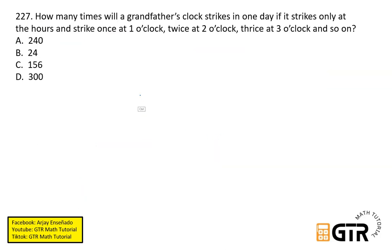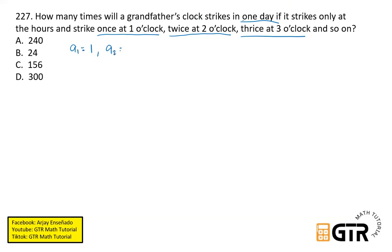Number 227: How many times will a grandfather's clock strike in one day if it strikes only at the hours — once at 1 o'clock, twice at 2 o'clock, thrice at 3 o'clock, and so on? This follows an arithmetic series. So a sub 1 equals 1, a sub 2 equals 2, a sub 3 equals 3, and so on up to a sub 12 equals 12, since the clock only goes up to 12.